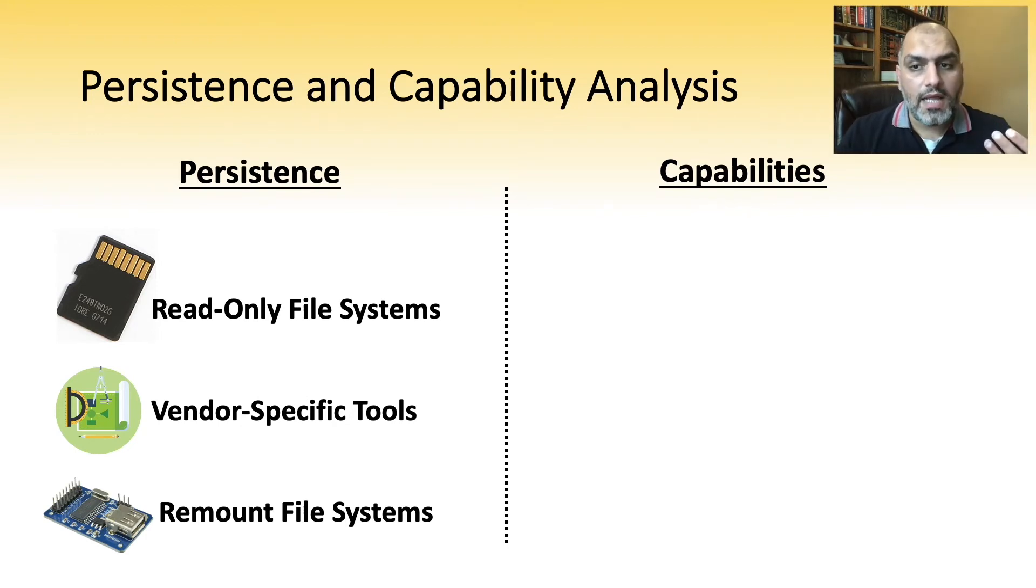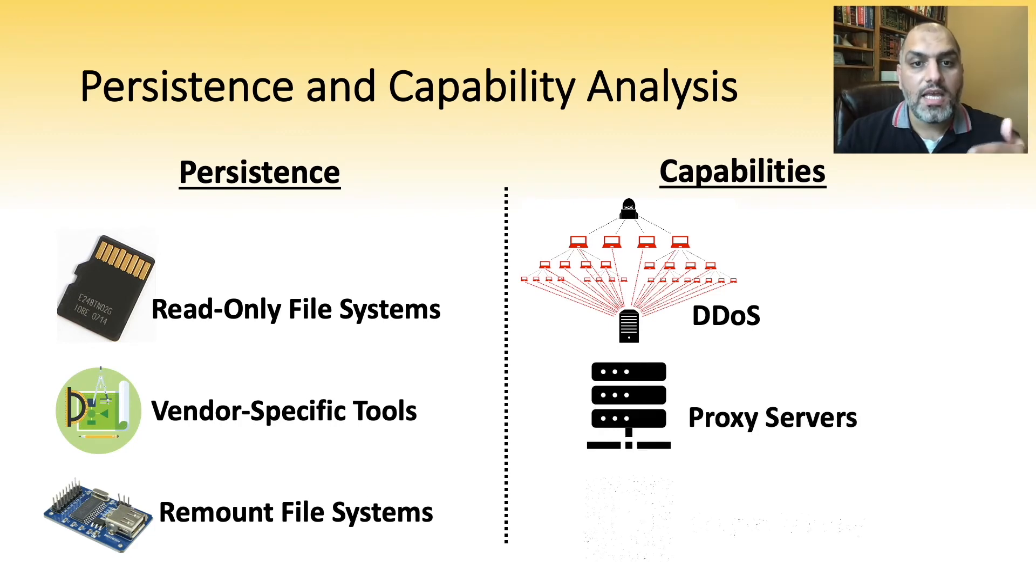From the capability analysis, we found many of Mirai's original capabilities intact, including DDoS and spreading. Additionally, we found proxy services and crypto mining services and also device bricking.